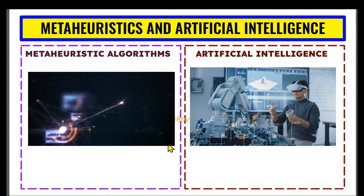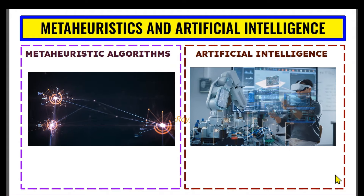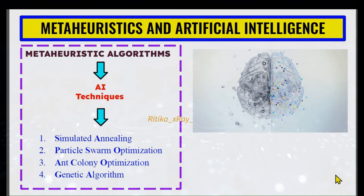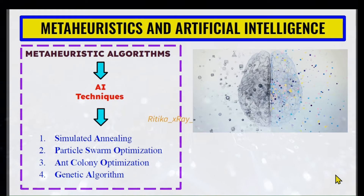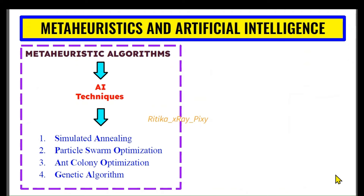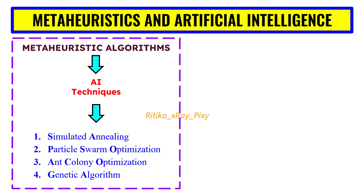Meta-heuristic algorithms are a specific type of artificial intelligence technique used for solving optimization problems. They are high-level techniques designed to solve difficult optimization problems where traditional methods are not efficient or feasible. Different meta-heuristic techniques include simulated annealing, particle swarm optimization, ant colony optimization, genetic algorithm, and artificial bee colony. These techniques are inspired by natural processes and heuristics to explore and exploit the search space efficiently.